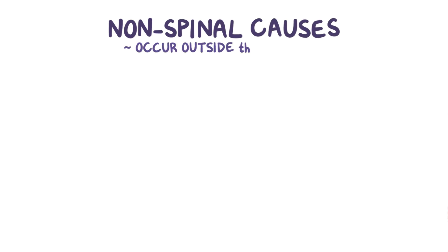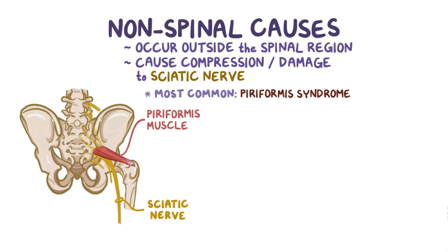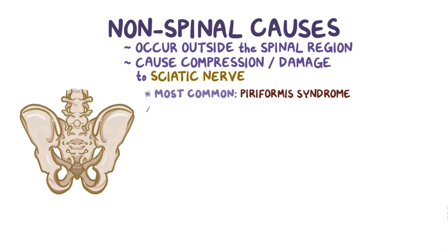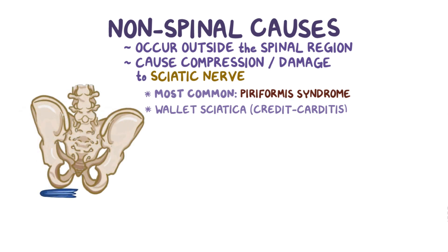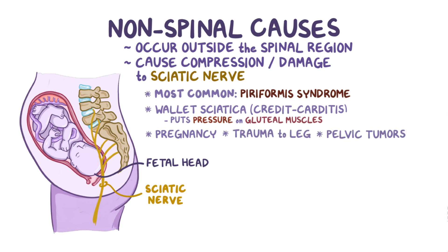Non-spinal causes occur outside of the spinal region and cause compression or damage to the sciatic nerve itself. The most common one is piriformis syndrome. The piriformis muscle and sciatic nerve are very close to each other, so if the piriformis muscle gets irritated it can cause muscle inflammation or muscle spasms that compress the sciatic nerve. A more recent phenomenon is so-called wallet sciatica, or credit carditis — many people carry their wallets or other objects in their back pockets, so when they sit down these objects put pressure on the gluteal muscles which compress the sciatic nerve. Pregnancy is another potential cause; when sitting, the fetal head presses down on the sciatic nerve just before it exits the pelvis. Other non-spinal causes include trauma to the leg and pelvic tumors, which can damage or compress the nerve directly.